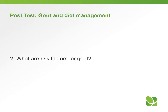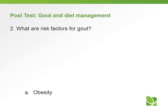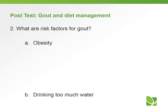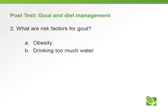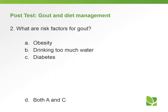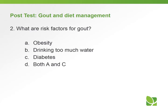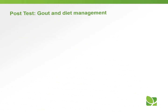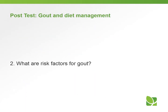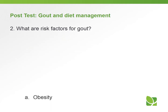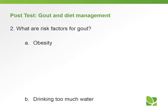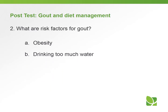Question number two: What are the risk factors for gout? A, obesity. B, drinking too much water. C, diabetes. Or D, both A and C. The answer to question number two is D, both A and C — obesity and diabetes.